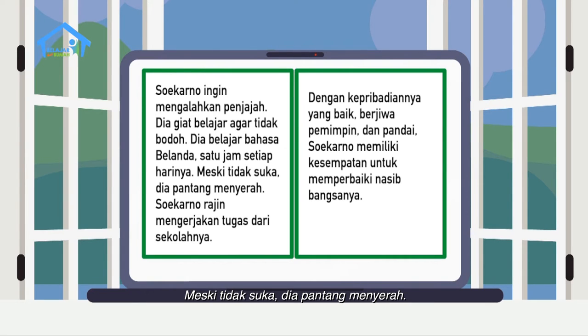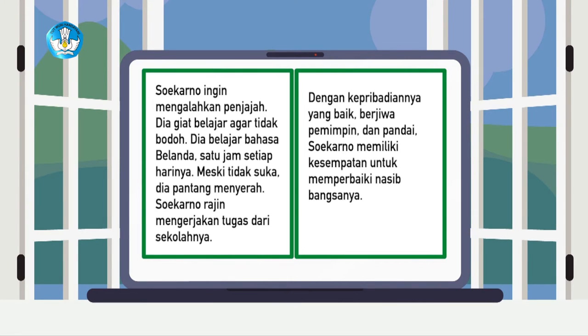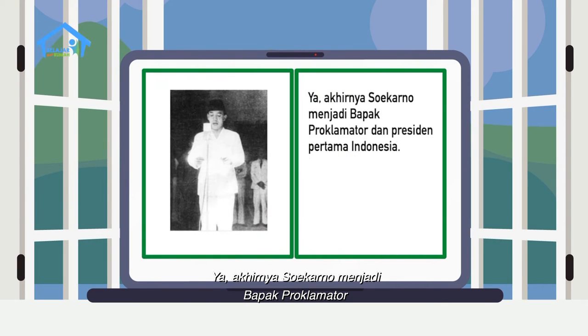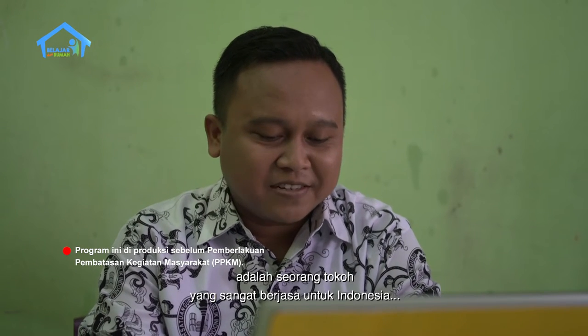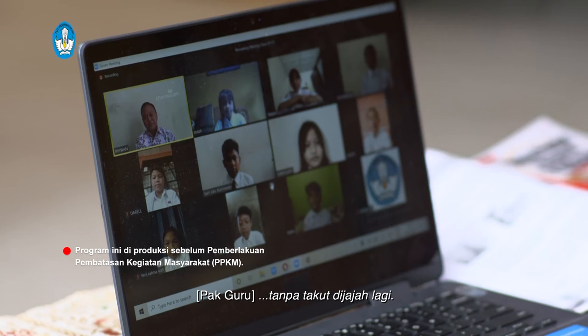Masa kecil Soekarno dilalui dalam kemiskinan, sebab saat itu negaranya dijajah bangsa asing dan rakyat tidak bisa hidup sejahtera. Soekarno ingin mengalahkan penjajah. Dia giat belajar agar tidak bodoh, belajar bahasa Belanda satu jam setiap harinya. Meski tidak suka, dia pantang menyerah. Dengan kepribadiannya yang baik, berjiwa pemimpin, dan pandai, akhirnya Soekarno menjadi Bapak Proklamator dan Presiden pertama Indonesia, sehingga kita bisa menjadi bangsa yang merdeka, bisa sekolah dengan nyaman dan aman tanpa takut dijajah lagi.